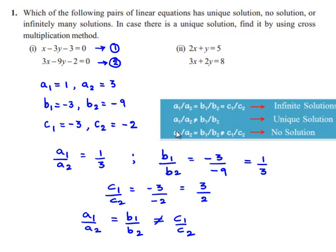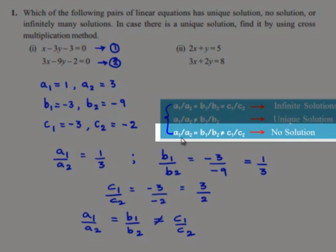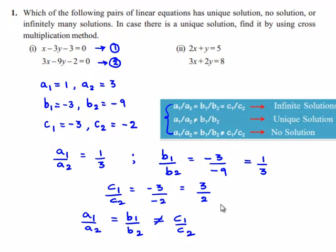If we observe from these three conditions, the second condition says that if a1/a2 = b1/b2 ≠ c1/c2, the given set of linear equations has no solution. That is, according to the given conditions, we can say that the given set of linear equations has no solution.